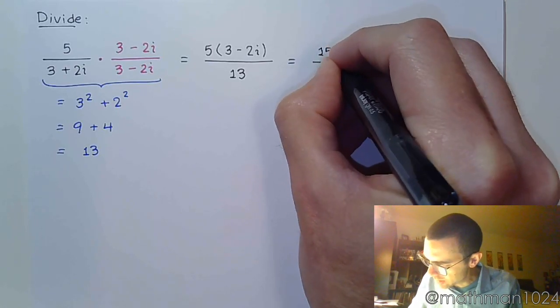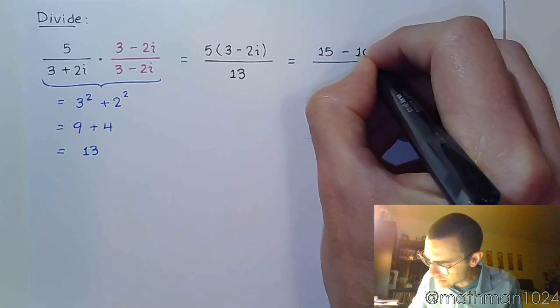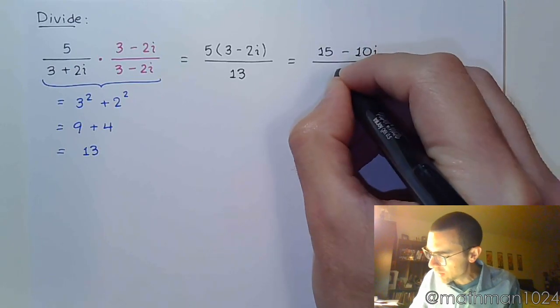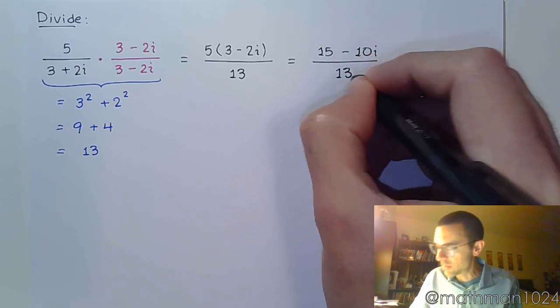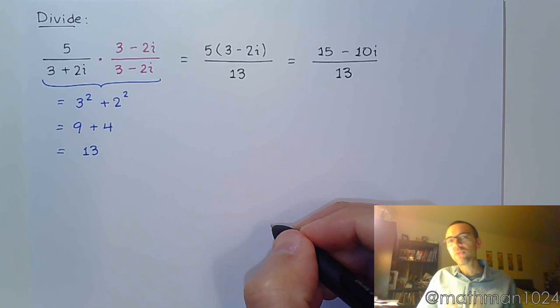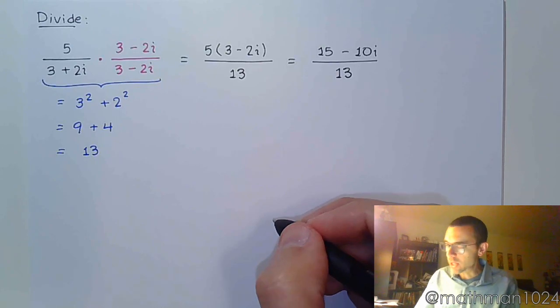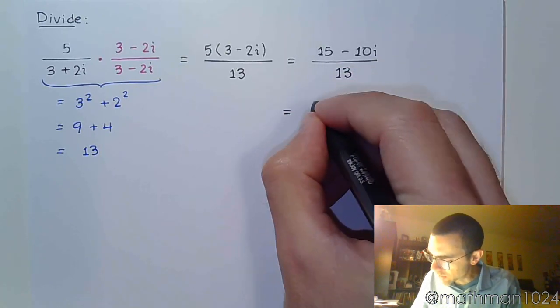So we have 15 minus 10i, and this is all divided by 13. But it's really in our best interest to go ahead and separate this. We have, clearly, the real part versus the imaginary part. So each of these will be over 13.